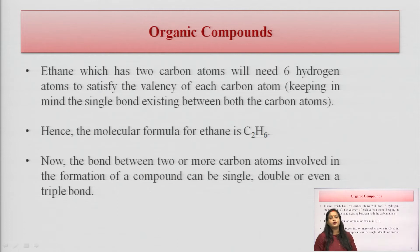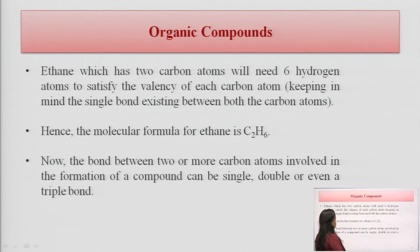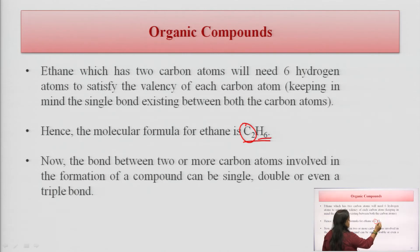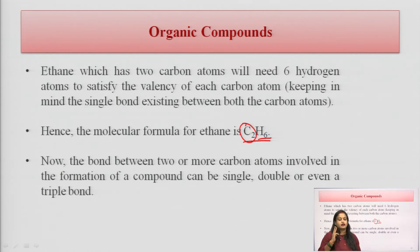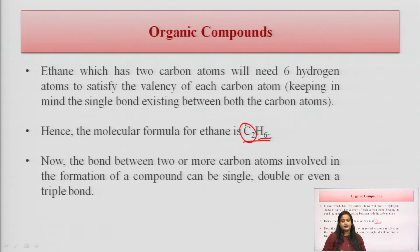Ethane has two carbon atoms and requires six hydrogen atoms to satisfy the valency of each carbon atom. The molecular formula of ethane is C2H6, where two carbon atoms are attached with six hydrogen atoms. After methane, comes ethane. Methane has only one carbon atom attached with four hydrogen atoms. The bond between two or more carbon atoms in a compound can be single, double, or even triple.